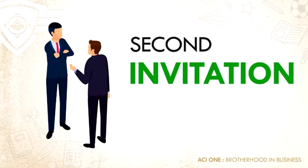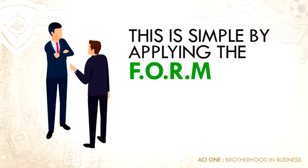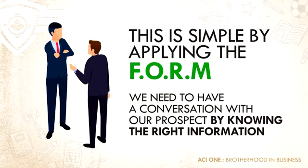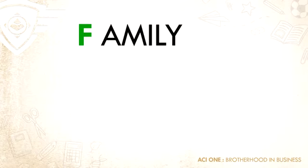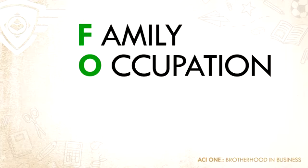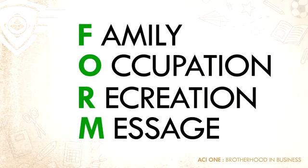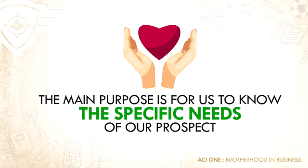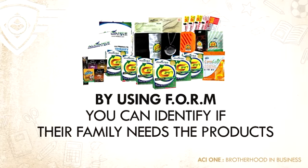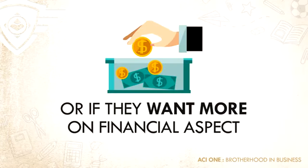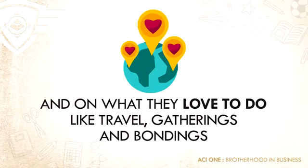Second is invitation. How can you invite your prospect? This is simple by applying the FORM method. We need to have a conversation with our prospect by knowing the right information regarding their F — family, O — occupation, R — recreation, and M — message. The main purpose is to know the specific needs of our prospect. By using FORM, you can identify if their families need the products, if they need a break from work, if they want more financial growth, or what they love to do, like travel, gatherings, and outings.